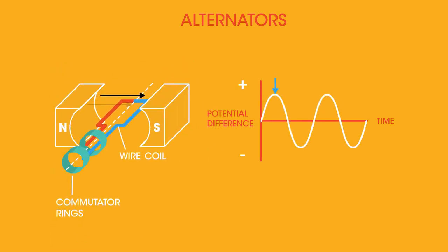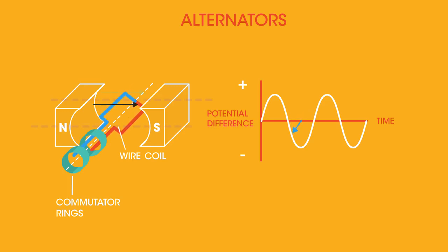When the wire coil cuts the magnetic field horizontally, the potential difference is at a maximum. As the coil carries on moving around, the potential difference decreases until the coil is not cutting the magnetic field at all, and the potential difference drops to zero. As the wire coil keeps moving and starts cutting the magnetic field again, we get a potential difference once more. Because the two sides of the coil are now moving in opposite directions — the blue wire moving down and the red wire moving up — the potential difference has reversed direction; it's now negative. Hence we have alternating current.